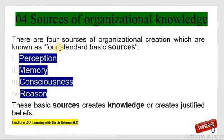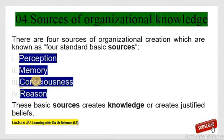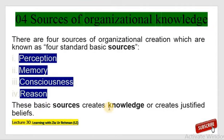There are four sources for organizational knowledge creation at the individual level, and these are: perception of the individuals, memory of the individuals, consciousness, and reasoning. When individuals perceive something, memorize something, have consciousness about something, and create reasoning about something, they can create knowledge in the organization. These basic sources create knowledge and create justified beliefs — these four sources either create organizational knowledge or create justified beliefs.